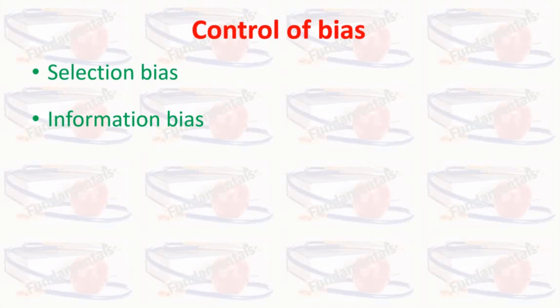Maintaining complete records and having definite means of contact with respondents prevents loss of information. Use of clearly defined means of determining both exposure and outcome, and blinding of interviewers and study participants to the study objectives, are also key control measures.